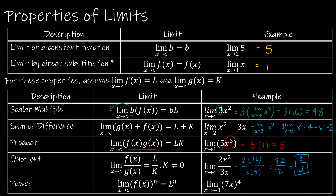The last property is power: if you've got a power function, it's okay to find the limit first and then take it to that power. For instance, instead of finding 7x to the fourth and plugging in negative one, I can find the limit as x approaches negative one of 7x — which is negative seven — and then take that to the fourth power, giving 2,401.